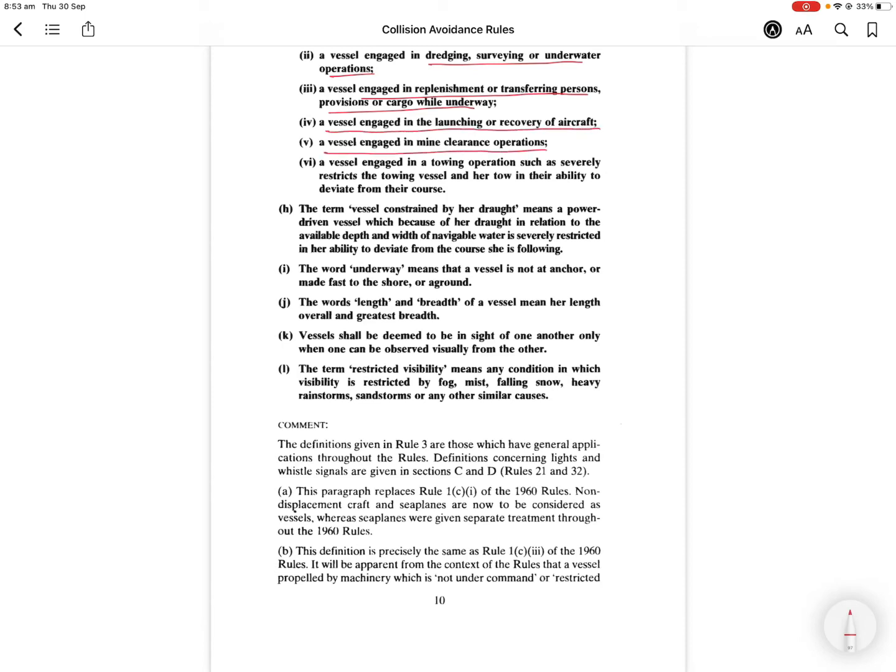A vessel engaged in the launching and recovery of aircraft, vessel engaged in mine clearance operations, and a vessel engaged in a towing operation such as severely restricts the towing vessel and her tow in their ability to deviate from the course. Now what the court says was that in Rule 3G it clearly says the types of works specified in the rule which involve highly specific as well as non-standard activities.